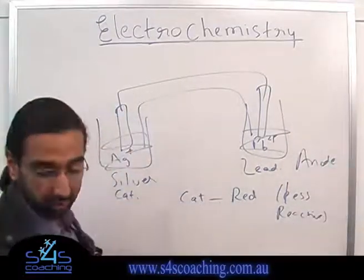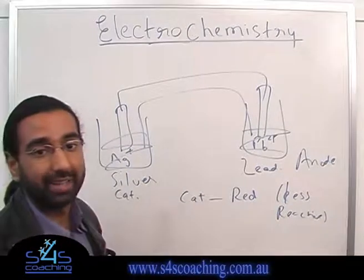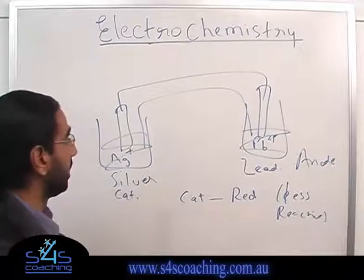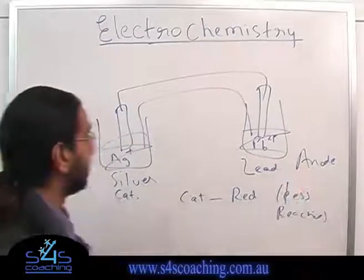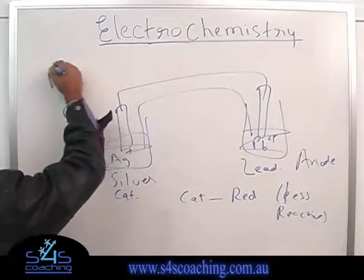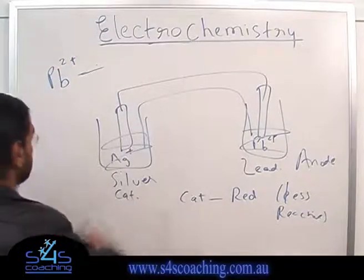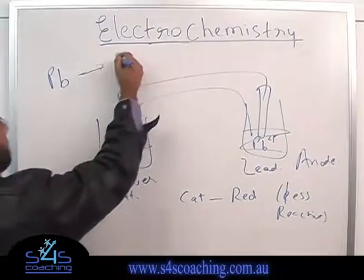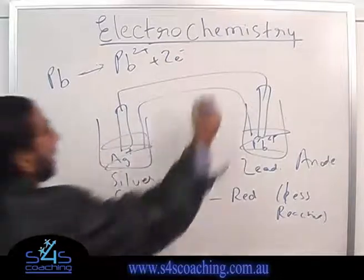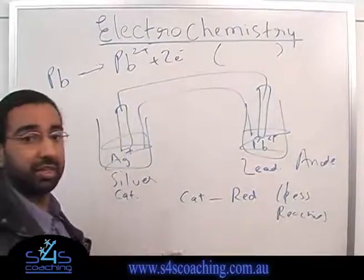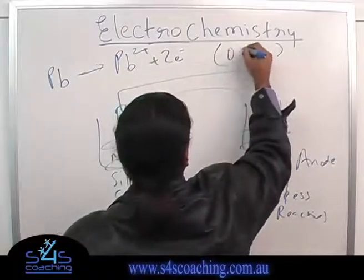The second question asks you to find the cell voltage. To find the cell voltage, you just need to write the half equations and then calculate it. Pb is going to undergo oxidation, so: Pb → Pb²⁺ + 2e⁻. From the data sheet, the value for this equation is 0.13 volts.